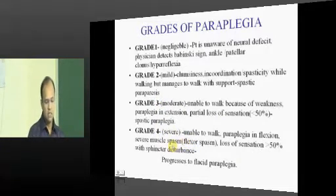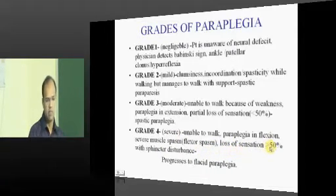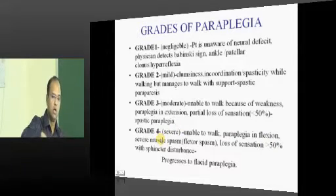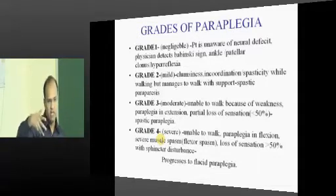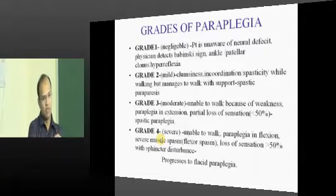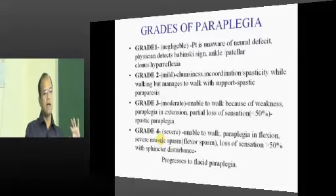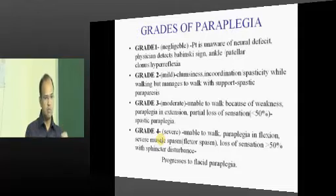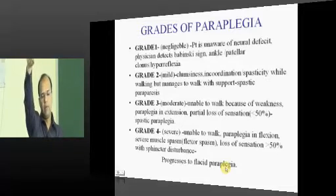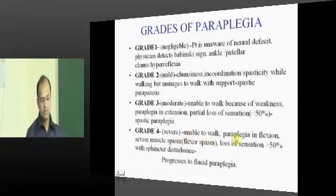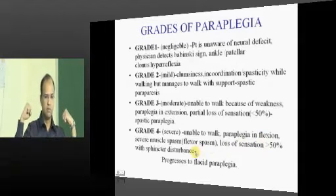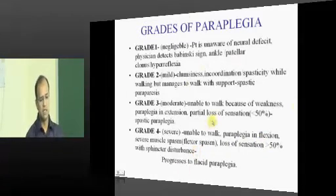In stage 4 it is called paraplegia in flexion. The patient will have a lot of flexor spasms and loss of sensation will be more than 50 percent, all depending on the amount of compression on the cord. Initially the patient will not be aware — only you will detect it. In the second phase the patient will say they cannot walk properly — that is spastic paraplegia. Stage 4 is flexor spasms followed by a very severe stage which ultimately ends up in flaccid paraplegia. If you lift the limb up it will fall down like a wooden log — that is flaccid paraplegia. Before that you have paraplegia in flexion and severe flexor spasms.